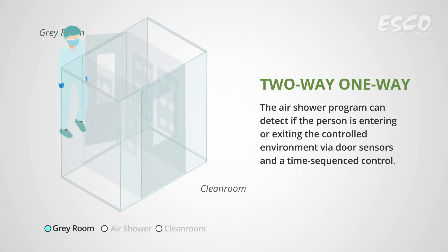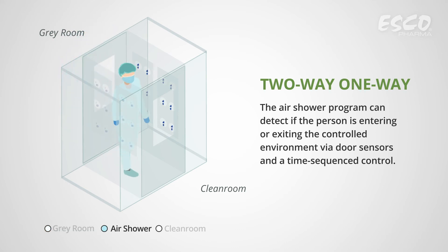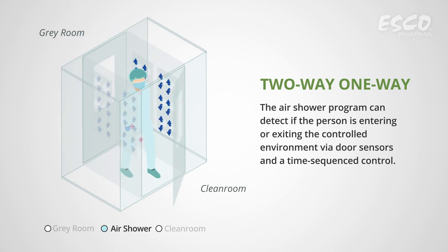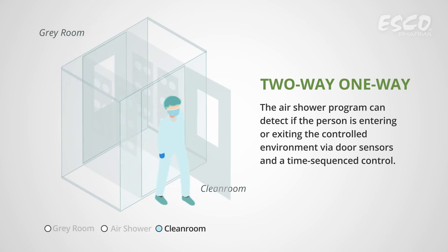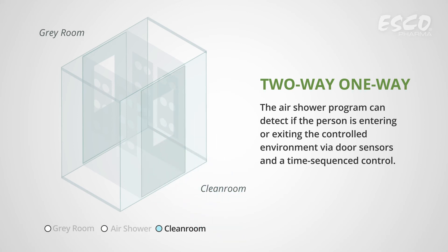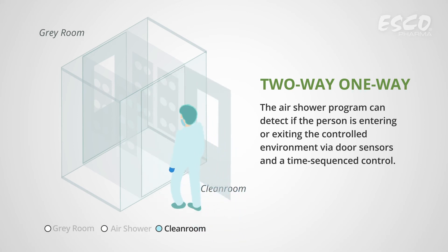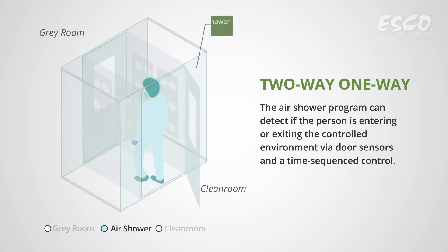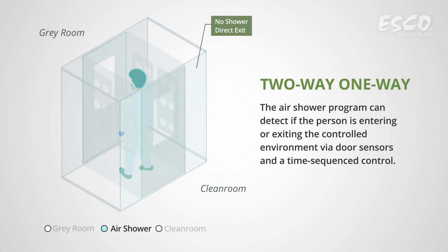Two-way one-way: Personnel may enter or exit the controlled environment through the air shower. In this pre-programmed sequence, the blower will only activate when personnel enters from the gray side to the clean side.